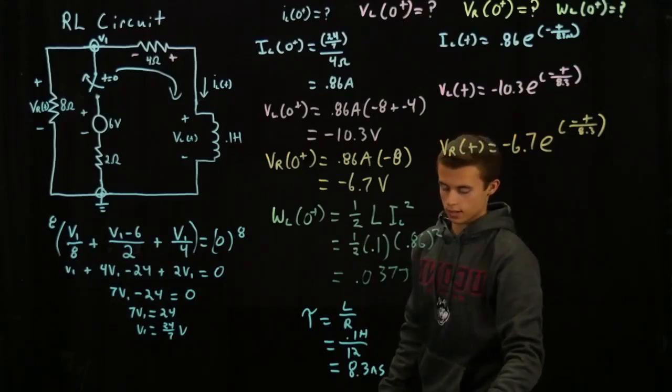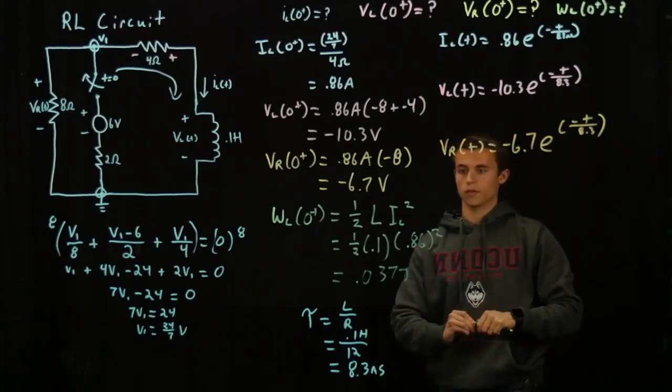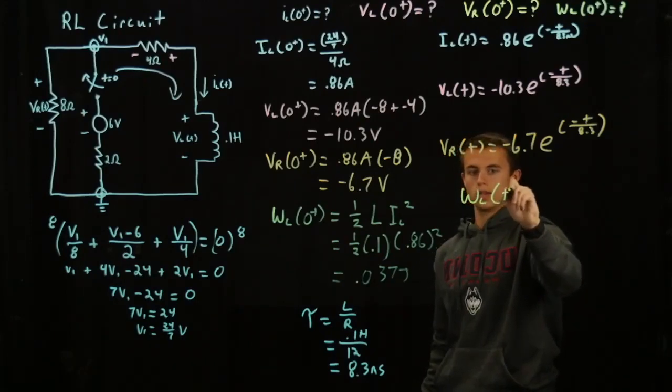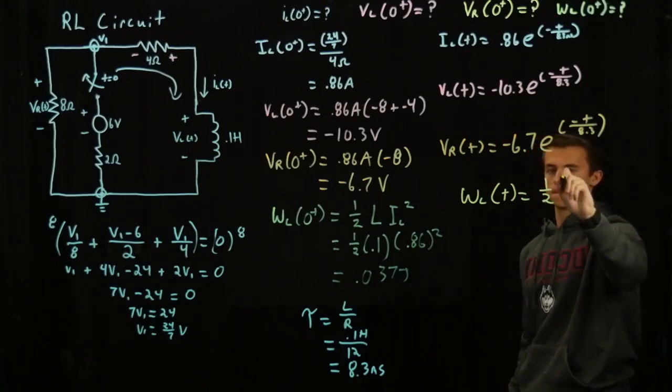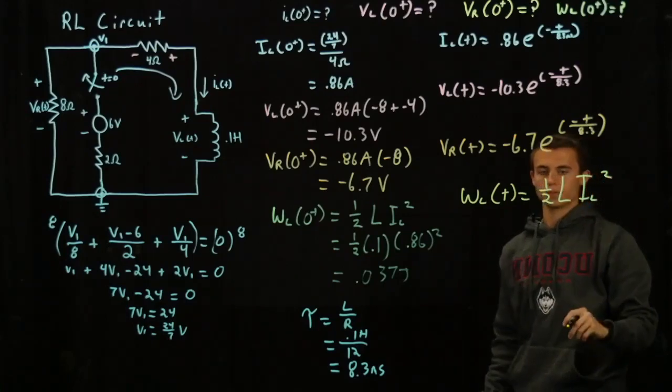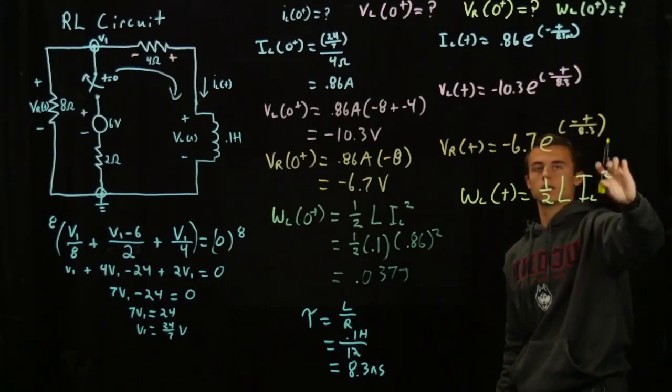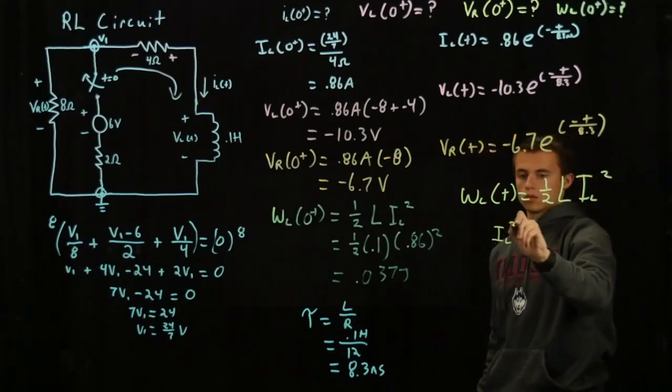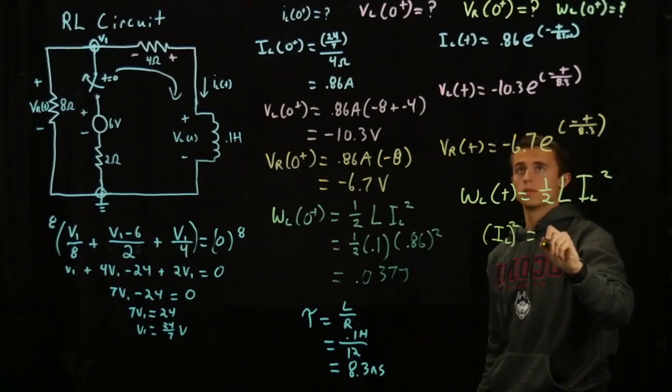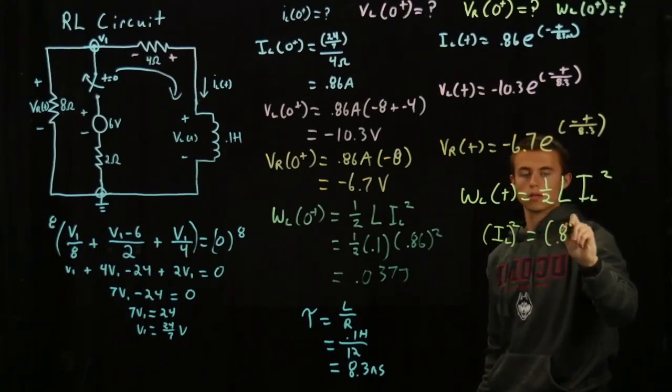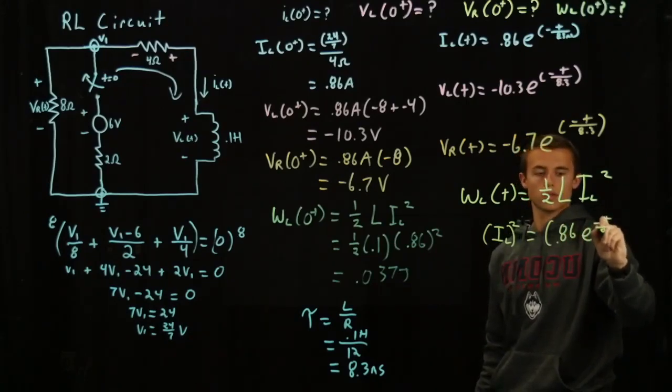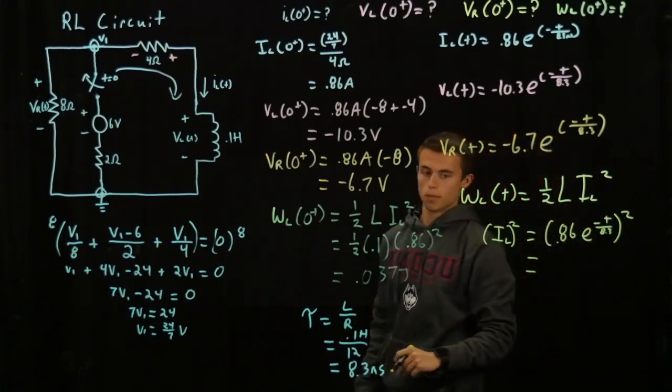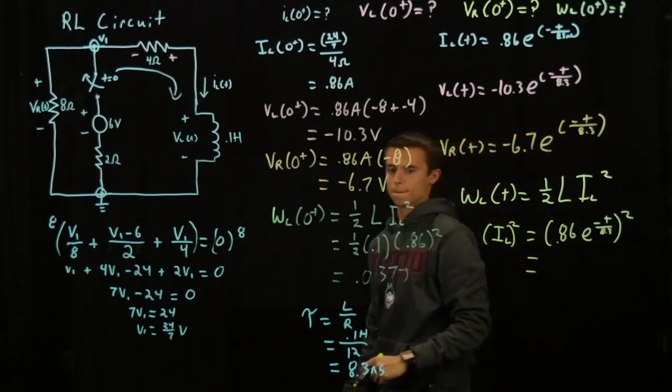And the last one, that's where it gets unique I would say. So you'll be solving for this equation again but at value T. So W_L of T is equal to one half L times I_L squared. We know the value of L, but I_L squared, we're going to have to square this above. I_L squared equals 0.86 exponential of negative T over 8.3 squared. Squaring this gives you, I have to grab my calculator for a second.